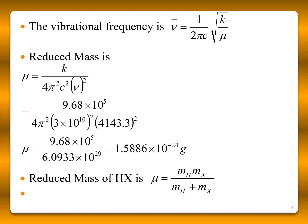From this, we can calculate the reduced mass mu is equal to k divided by 4 pi squared c squared nu bar squared. And now, you substitute all the values. Here, you have to substitute c squared as 3 times 10 to the power 10 squared. It is in terms of centimeter. If you substitute the values of k and nu bar, then you can arrive the reduced mass is 1.5886 times 10 to the power minus 24 grams.